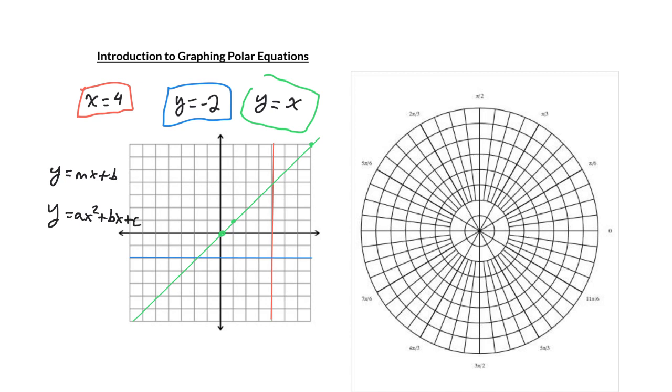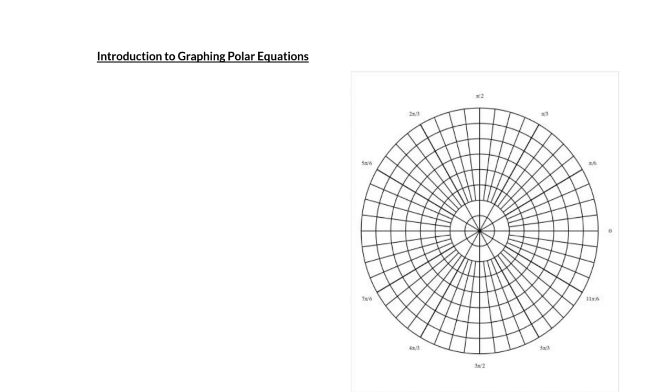We would like to do a similar thing, but with polar equations. We're going to start with some simple polar equations. How about we start with things where we don't have both r and theta at the same time? Maybe we'll start with something like r equals 2.